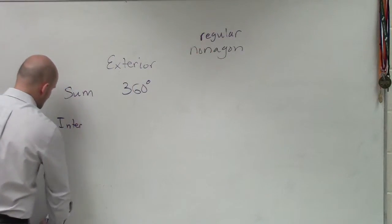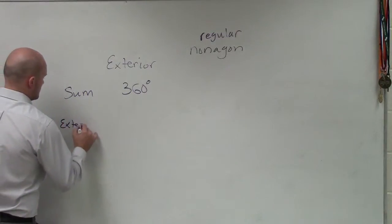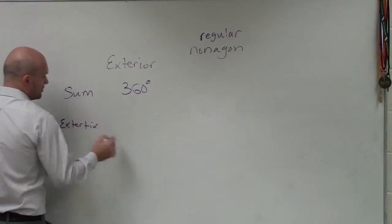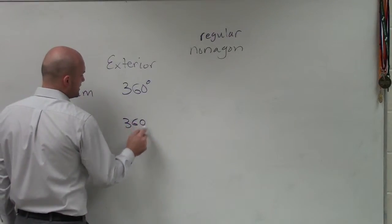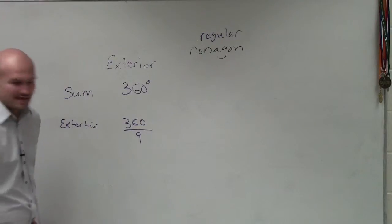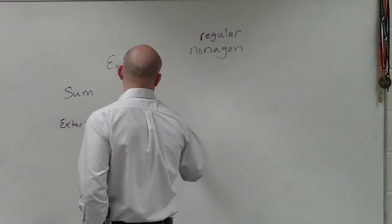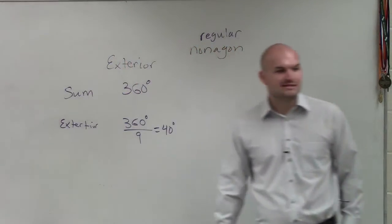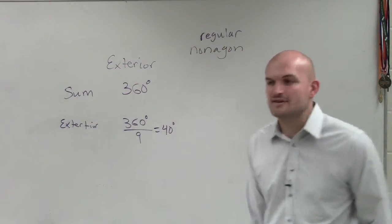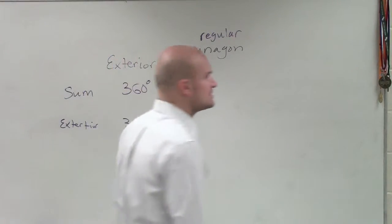So exterior, we do 360 divided by nine. And that's going to equal 40 degrees. So what that means, ladies and gentlemen, is the individual measure of the exterior angle of a nonagon is going to be 40 degrees.